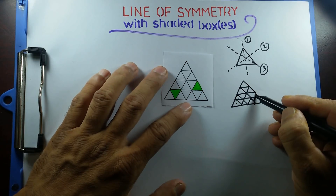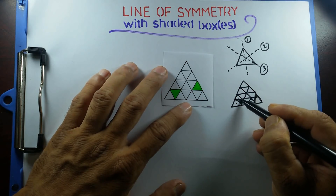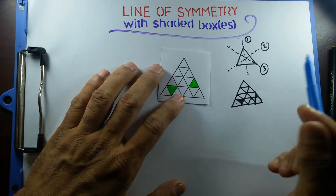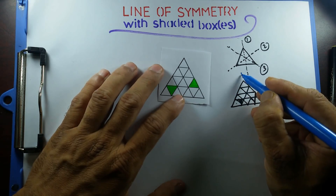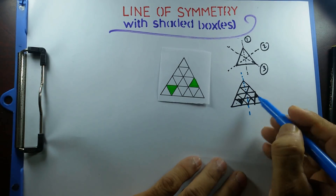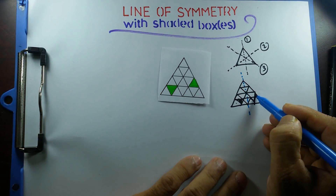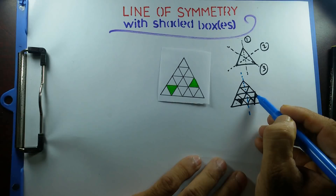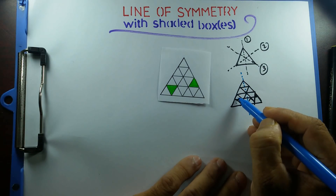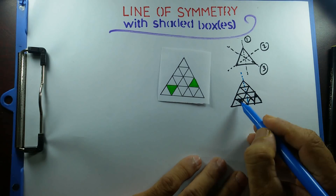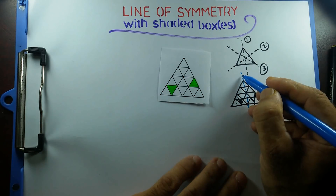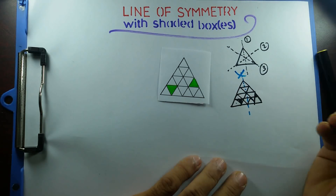So the shaded part is this one and this one. Now if I draw the perpendicular line from here to here and fold it, this shaded triangle will fall over here — but this is not shaded. And this one will fall onto this one — it's not shaded either. So this line of symmetry is not going to work.